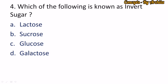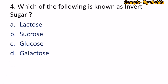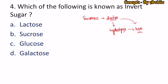Question 4: Which of the following is known as invert sugar? Sucrose itself is dextrorotatory in nature. But after hydrolysis, its optical rotation changes to levorotatory. This change in rotation from dextrorotatory to levorotatory is known as inversion, which is why sucrose is also called invert sugar. So the correct answer is sucrose.